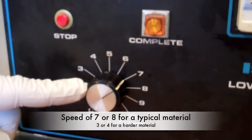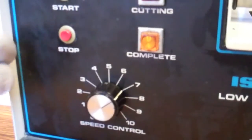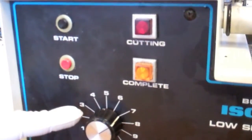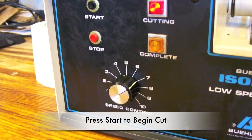Typical speeds for cutting soft materials are between 7 and 8 and 3 or 4 for a hard material. If the speed is too high for a hard material, the circuit breaker will pop and the machine will have to cool and reset. To start the cut, press the start button.